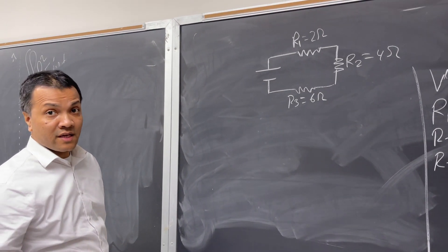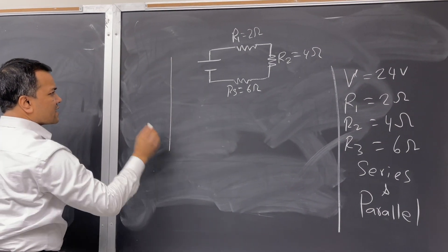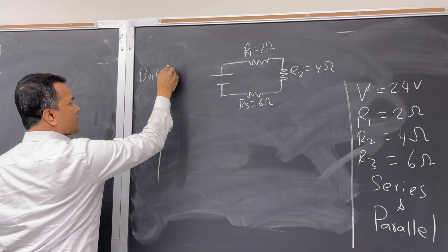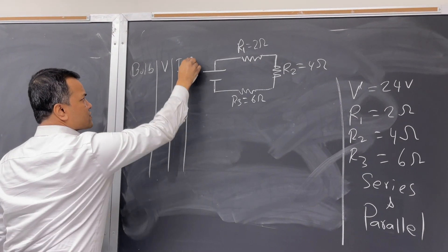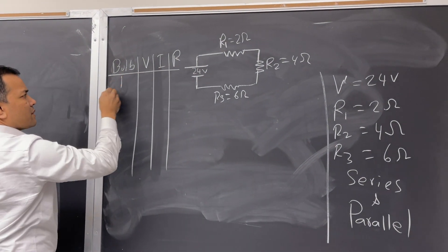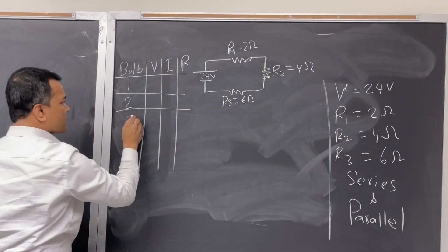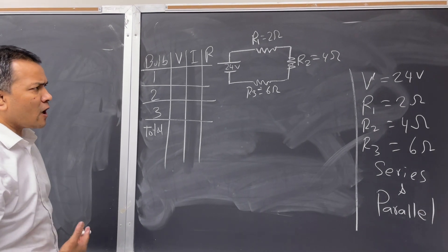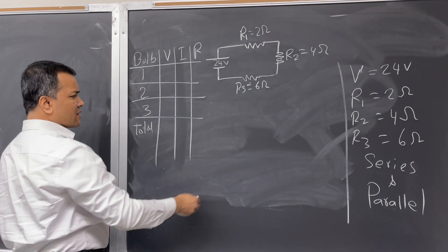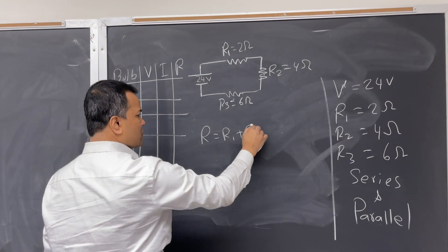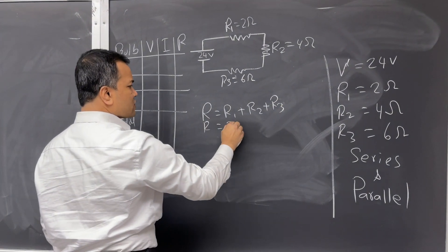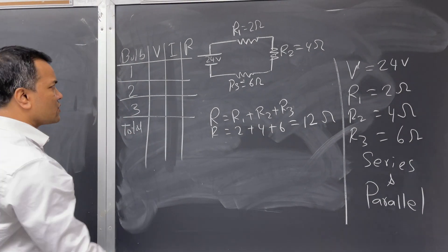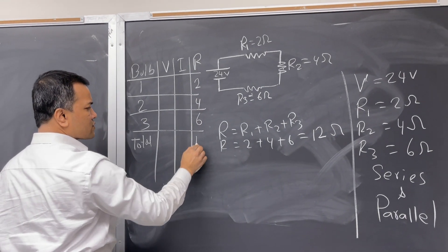Next we're going to create a table with columns for bulb, V, I, and R, with a 24-volt source. Bulbs 1, 2, and 3, plus a total row. Using Ohm's law and the series circuit rules to calculate resistance: R total equals R1 plus R2 plus R3, which is 2 plus 4 plus 6 equals 12 ohms.